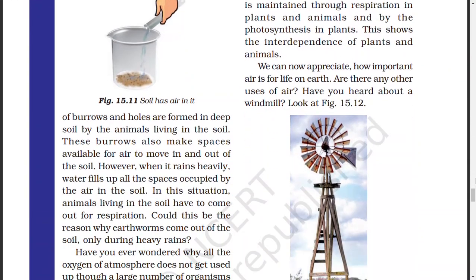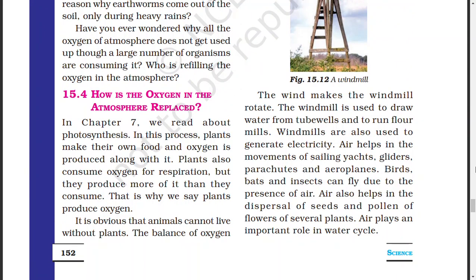Next, we will look at a windmill. When we use a windmill, we can run tube wells and flour mills. We can also generate electricity using windmill. Air also helps with parachutes and aeroplanes. In the presence of air, plants disperse their seeds and pollen to different parts. The water cycle is also very important. Thank you friends. If you like this video, please like and share it.